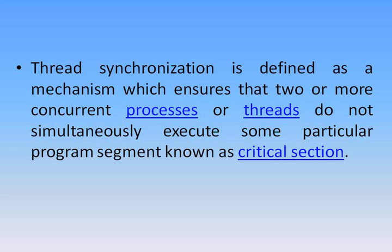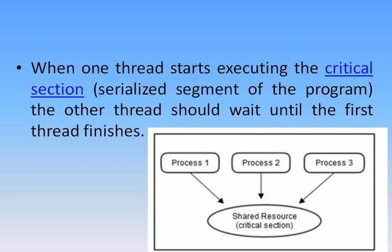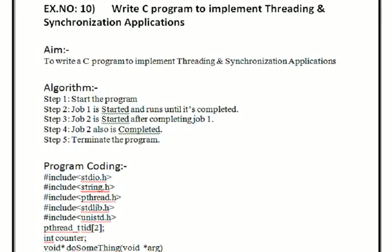Here we see three processes requesting the same shared resources. When one thread starts executing the critical section, the other threads should wait until the first thread finishes. If the first process finishes, then only the next process can share the resource, and after process 2 finishes, process 3 will share the resources.